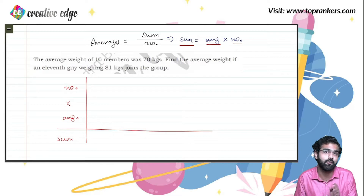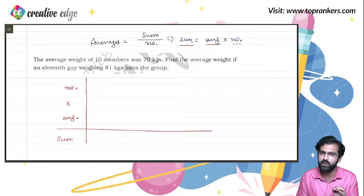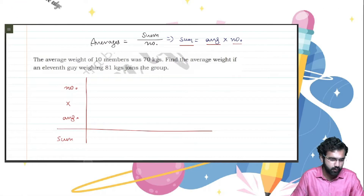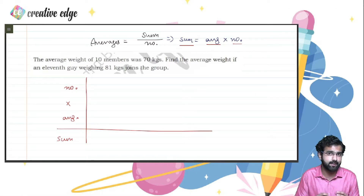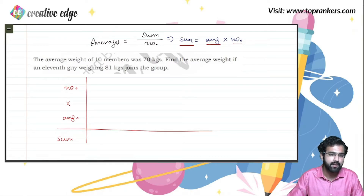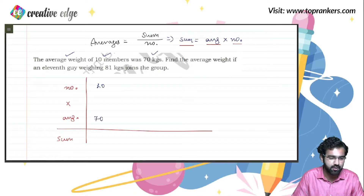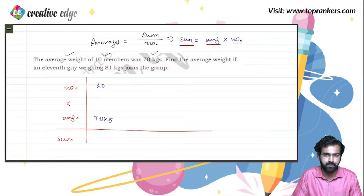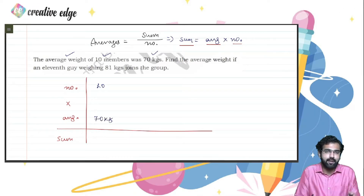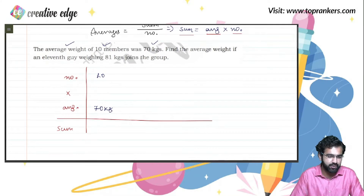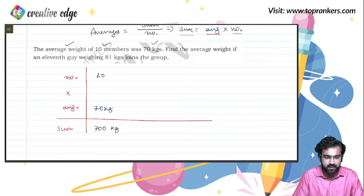I'm going to tell you a different approach as well which will drastically help you figure out answers within fractions of seconds. Let's first learn the core concept through an example. The average weight of 10 members is 70 kg. If I were to figure out the total weight of the entire group, that is going to be 70 times 10, which is clearly 700 kgs.